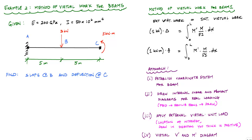In this problem, it's a little bit more complicated than example one, but the process we're going to take stays the same. We've got a cantilever beam fixed at point A, a concentrated force of 3 kilonewtons applied at point B, and a concentrated moment going counterclockwise applied at point C. I am given the modulus of elasticity and the moment of inertia of the cross-section, and what I want to do is find the slope at point B and the deflection at point C.